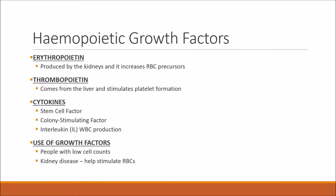To kick-start haemopoiesis you need haemopoietic growth factors. Four examples are: erythropoietin, produced by the kidneys, which increases the amount of red blood cell precursors; thrombopoietin, from the liver, which stimulates platelet formation; and various cytokines including stem cell factors, colony stimulating factors, and interleukin (IL-2), which increases white blood cell production.